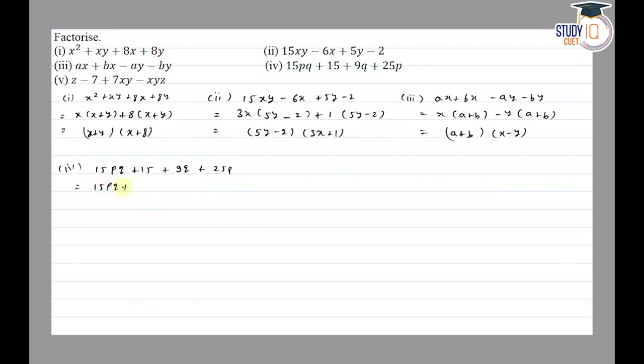Plus 25P plus 9Q. So we have 3Q common, so we will arrange 5P plus 3, so 5P both sides, and 3Q plus 5. This is the factors.